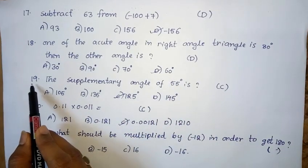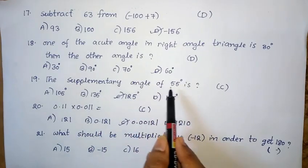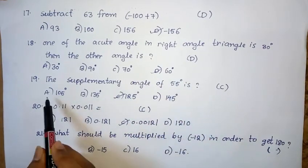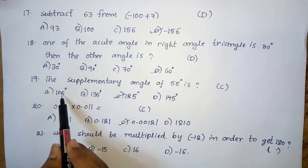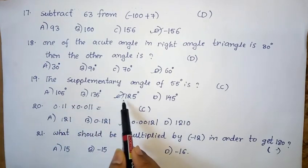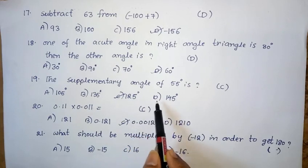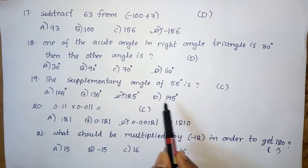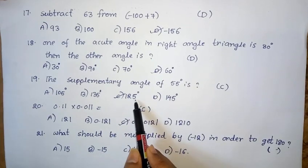Nineteenth question: The supplementary angle of 55 degrees is — Option A: 105 degrees. Option B: 135 degrees. Option C: 125 degrees. Option D: 145 degrees. The right answer is option C — 125 degrees.